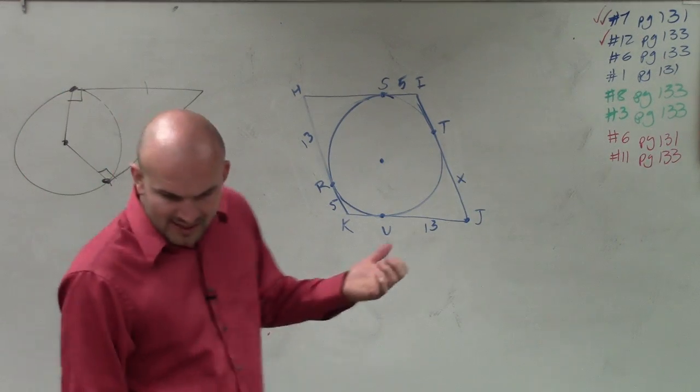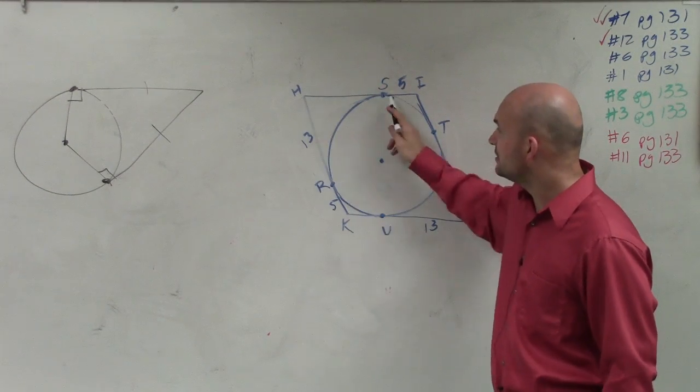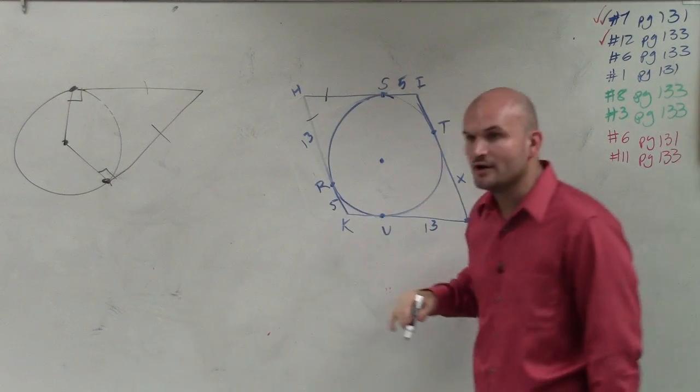So for number one, they say that all the lines that look tangent are tangent. So therefore, this line is tangent and that line is tangent. So therefore, these two are equal to each other.